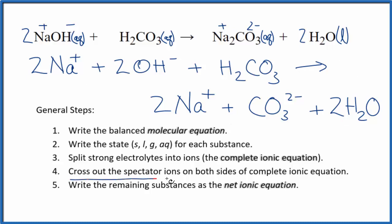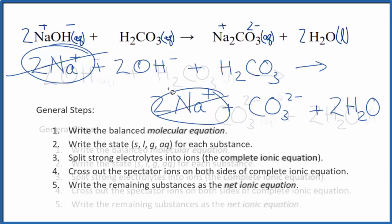Now we can cross out the spectator ions. They're on both sides of the complete ionic equation. I can see in the reactants, I have two sodium ions, and in the products. Cross it out. But everything else is unique, so that makes this the net ionic equation for NaOH plus H2CO3. Let me clean this up, write the states in, we'll have our net ionic equation.